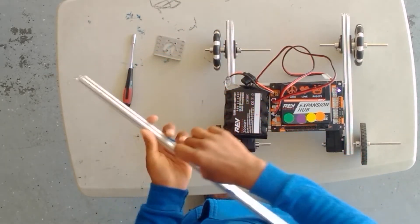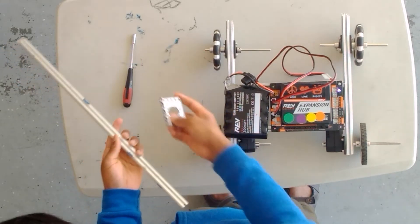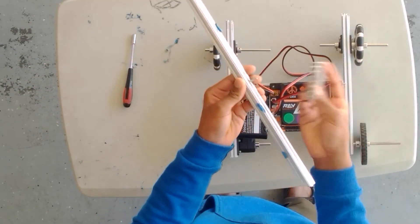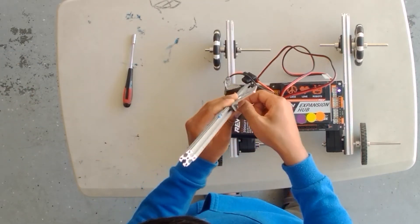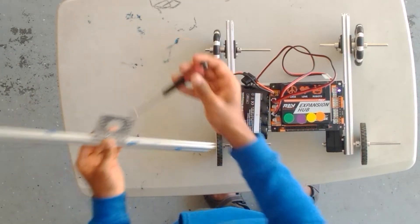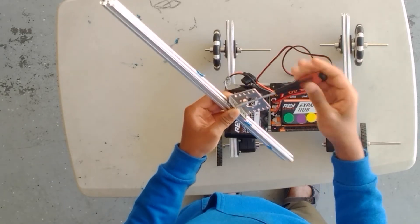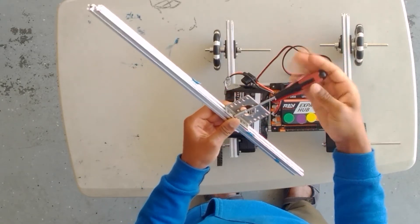These hex screws are M3 screws and they can be used to attach brackets such as this motor bracket onto the extrusions and then it goes over them and this is the main way REV robots are built.